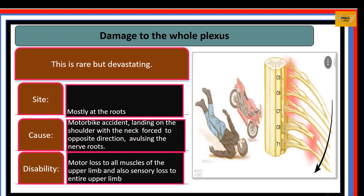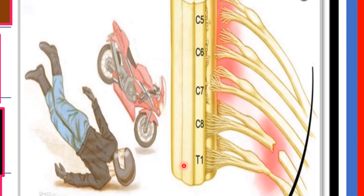We start with damage to the whole plexus. While rare, the site is mostly at the roots. When avulsion involves all roots of the brachial plexus, this results in total brachial plexus damage — typically caused by motorbike accidents involving landing on the shoulder. When this happens, there is complete motor loss to all muscles of the upper limb and sensory loss to the entire upper limb.